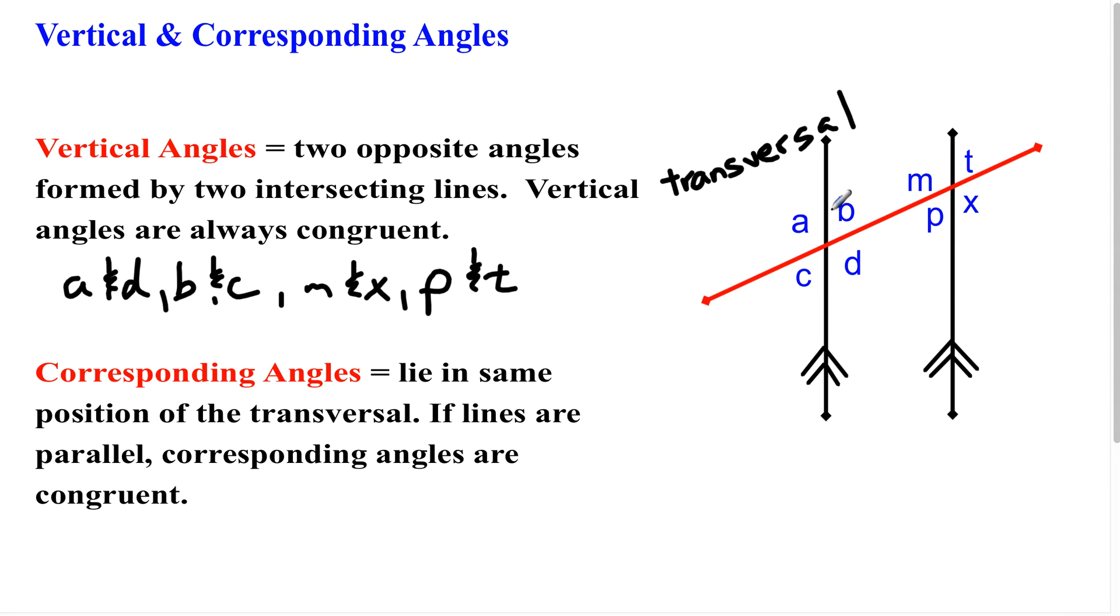If you notice that these four angles here, angle B would be what I would consider the top right angle of these four. Angle T over here would also be on the top right. So these would be what we call corresponding angles. So over here, I'm going to write down that pair. So B and T would be considered corresponding.